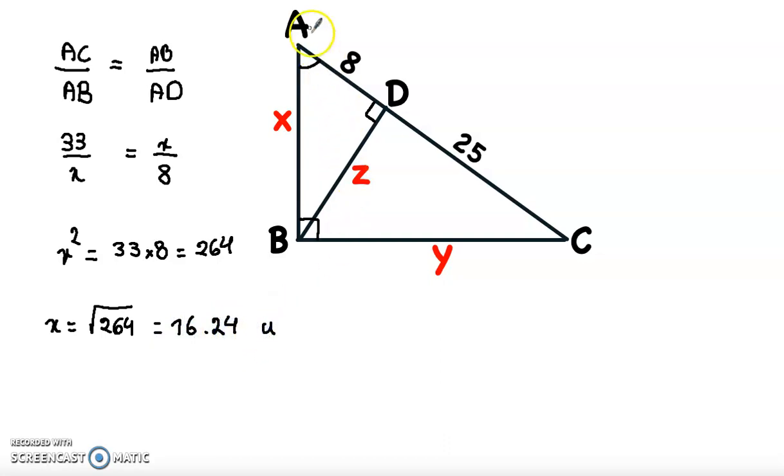Now to find Y, we will apply Pythagorean theorem in triangle ABC. So it's a right triangle. In this case, AC squared equal to AB squared plus BC squared. Now AC squared is 8 plus 25, 33, so 33 squared